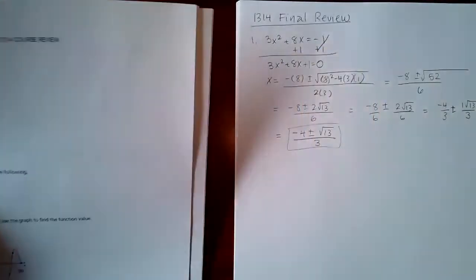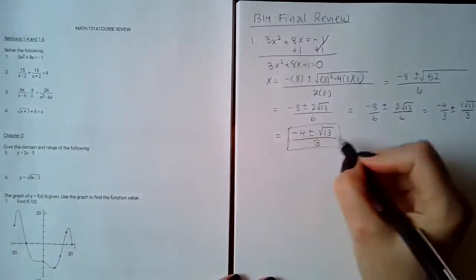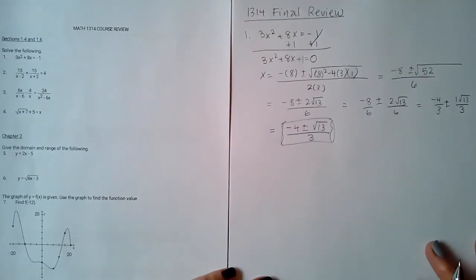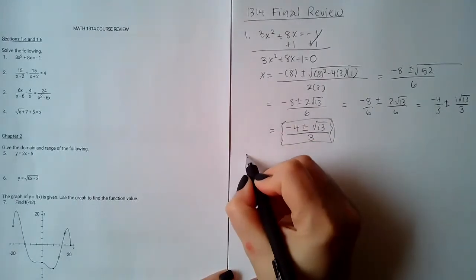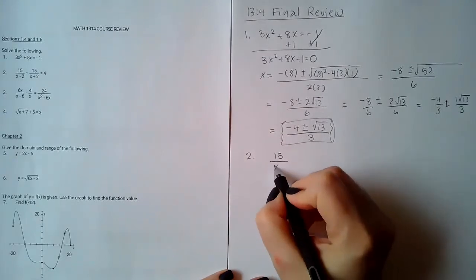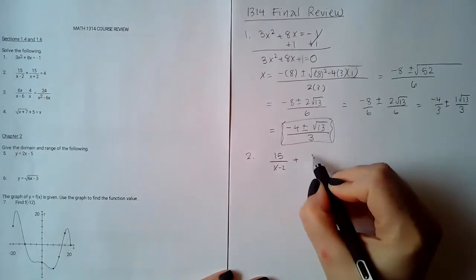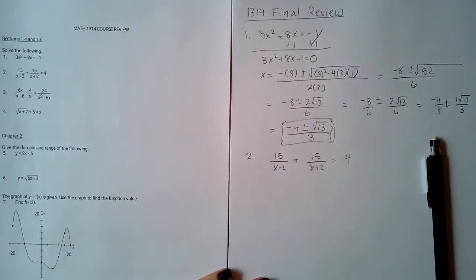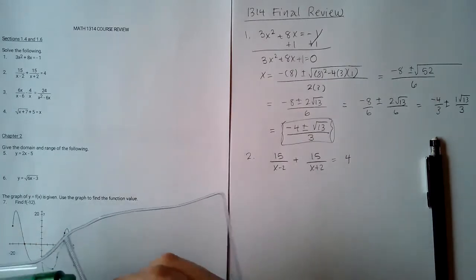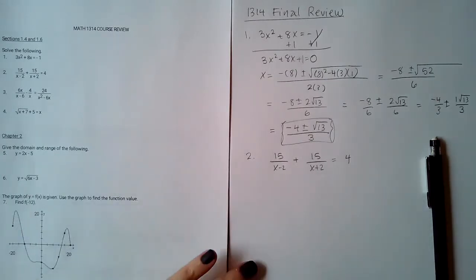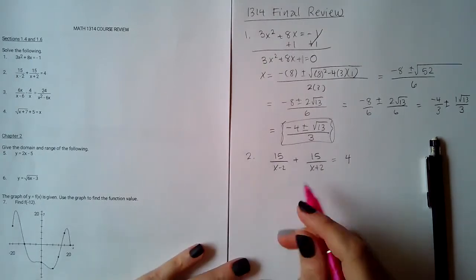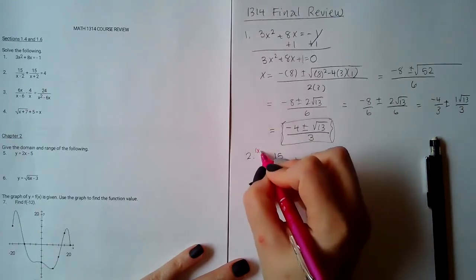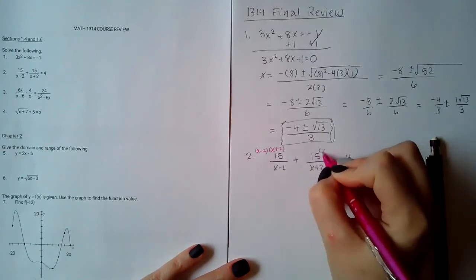You can always check your answer in the back, and sure enough they have that answer there. Yours is going to be multiple choice so you'll be able to select it from the choices. Now for number two we have 15 over x minus 2 plus 15 over x plus 2 equal to 4. To solve equations that have fractions, we multiply every single term by the common denominator, and here I have two different factors so I actually have to use both when multiplying.